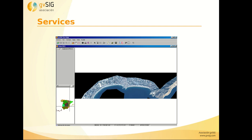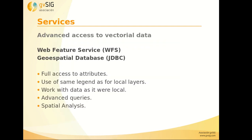Here we can see a web coverage service. And the other advanced service for vector data is the web feature service or geospatial database, for example PostGIS. For these services, we have full access to the attributes. So we can open the attribute table, select elements, change the legend depending on the field of the attribute table, make advanced queries, or do spatial analysis. For example, we can do a buffer, dissolve, or an intersection between a web feature service and our shapefile.